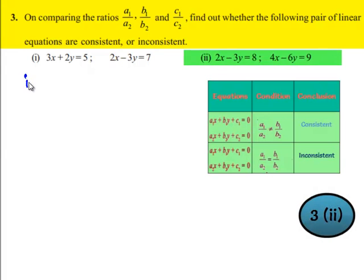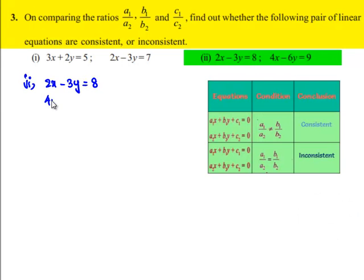Moving on to the second problem: 2x minus 3y equals 8, and 4x minus 6y equals 9.